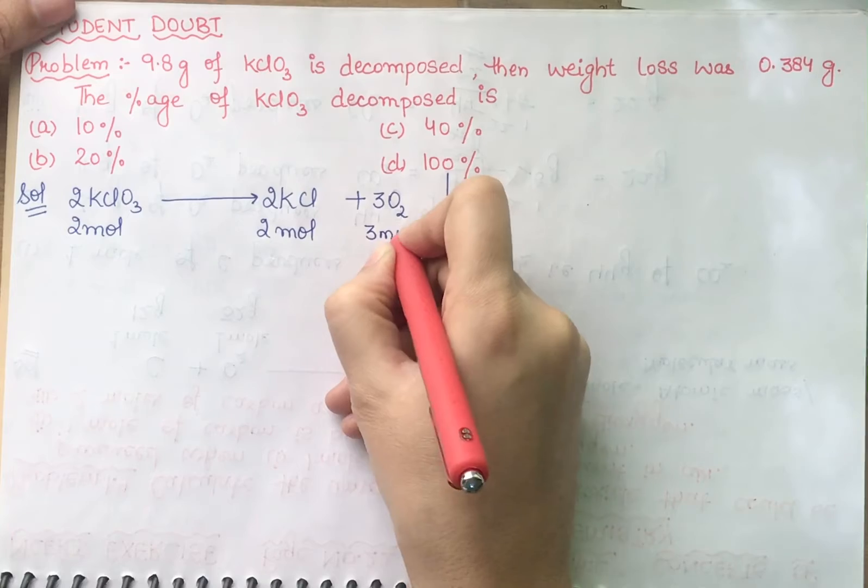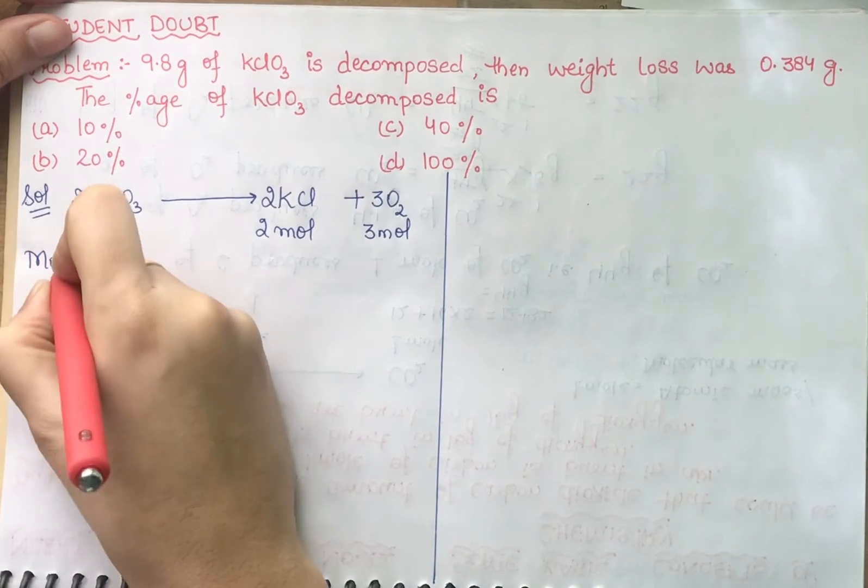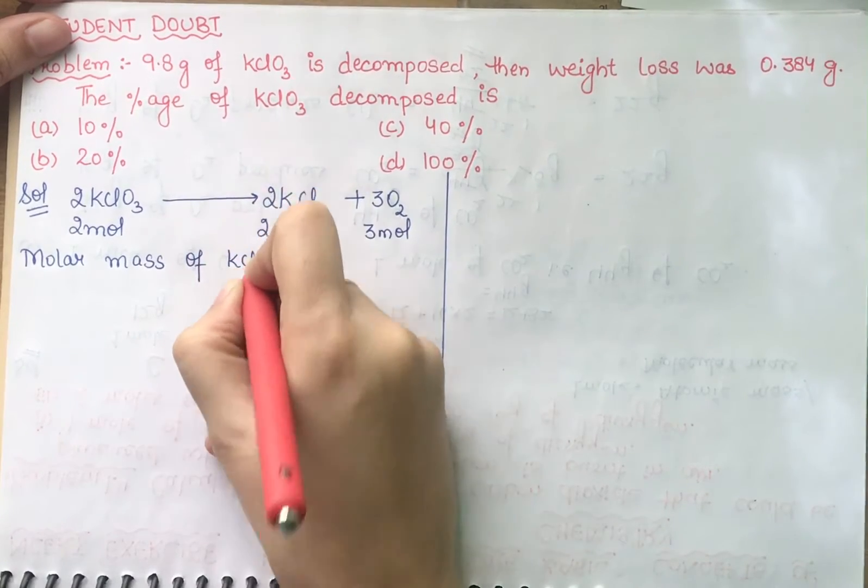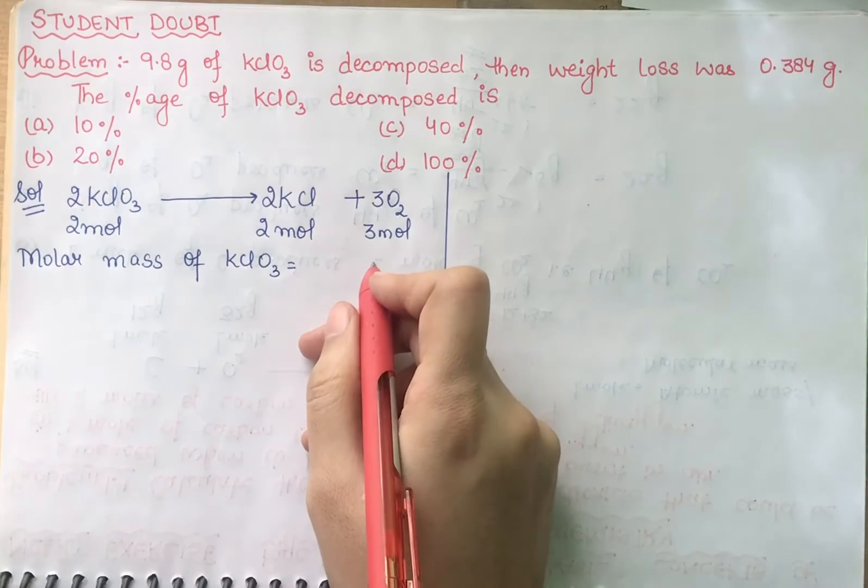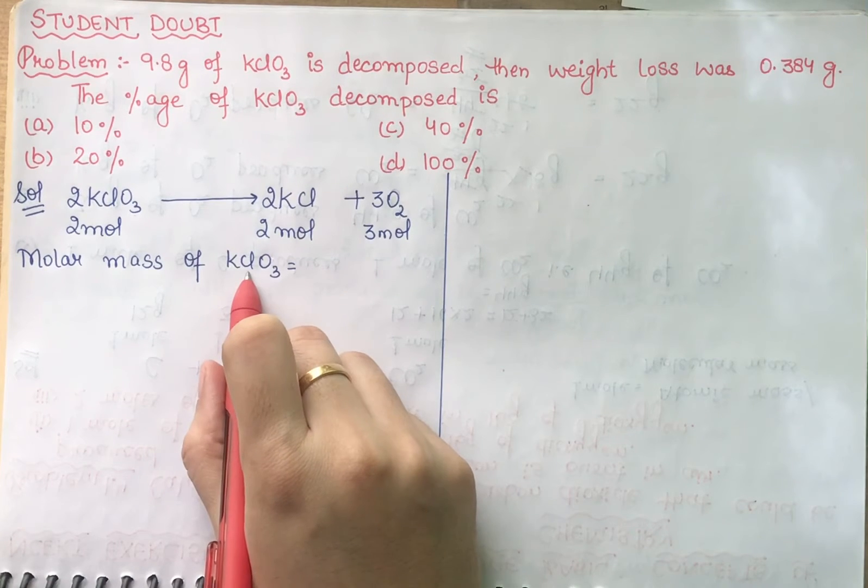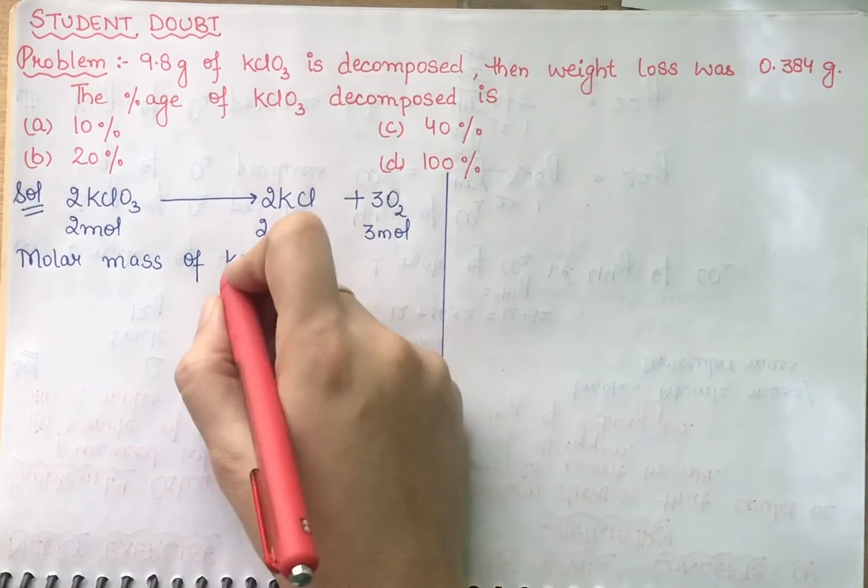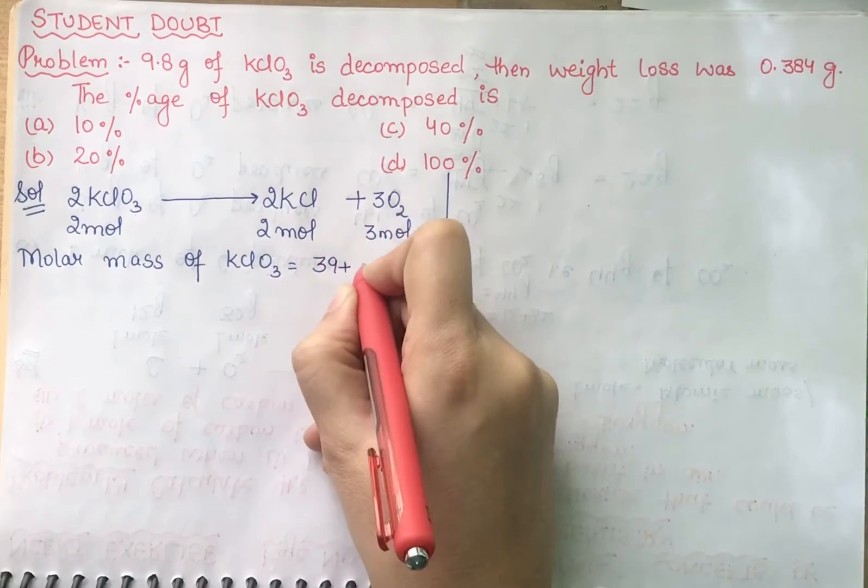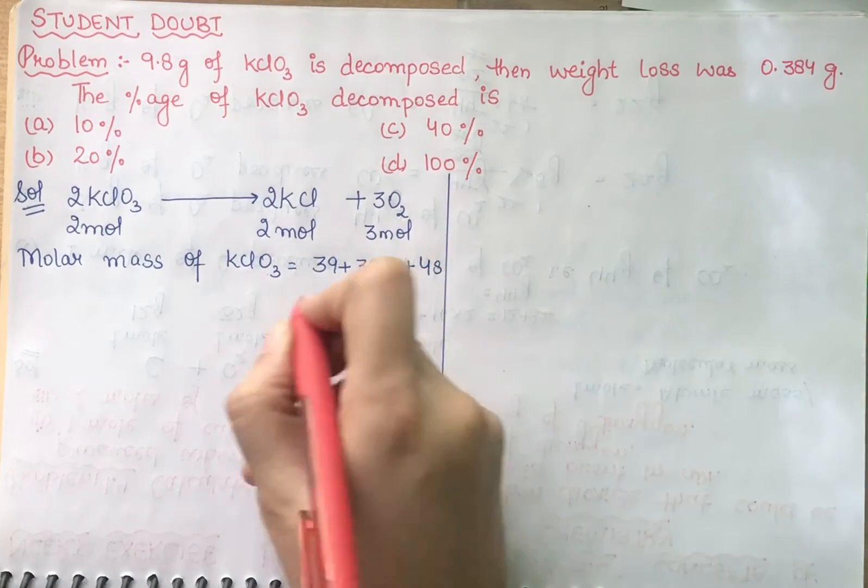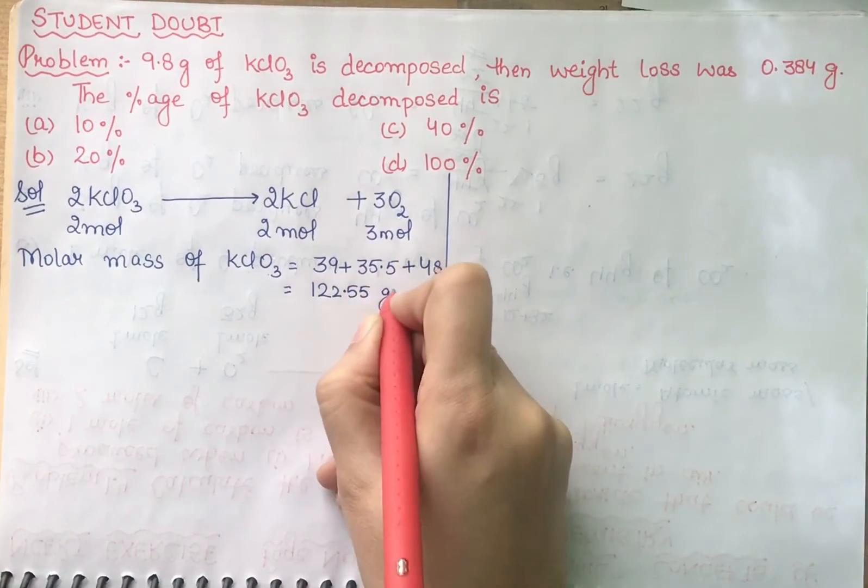Now let's see, we have 2 moles of KClO3 forming 2 moles of KCl plus 3 moles of oxygen. Let's calculate the molar mass of KClO3, which is potassium 39 plus chlorine 35.5 plus oxygen 16 times 3. So we have 39 plus 35.5 plus 48, which equals 122.5 grams per mole.